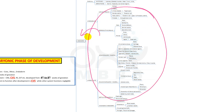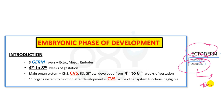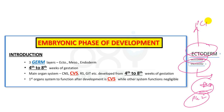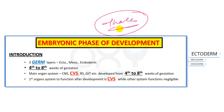So these are all the structures derived from the endoderm and mesoderm. This completes the discussion of structures derived from ectoderm, mesoderm, and endoderm — all of which are very important for your PG entrance exam. Thanks for watching and best wishes for your bright future.